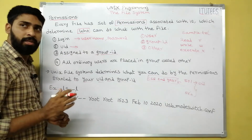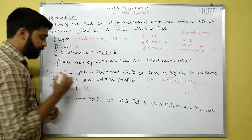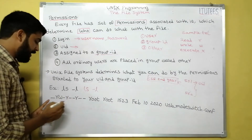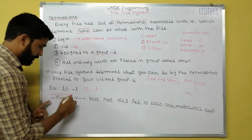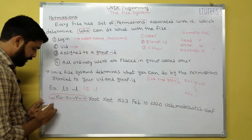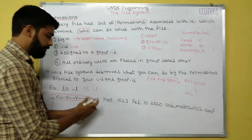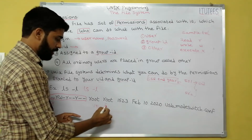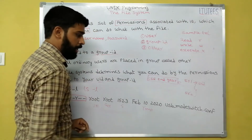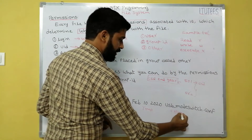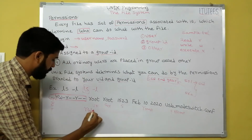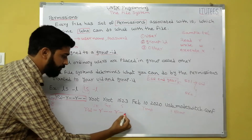Let us look at an example. To list files we use the ls command — specifically ls -l for long listing format. It displays output including the file type, permissions, username, group name, size, last modification time, and file name. We already discussed the ls command in our previous classes.